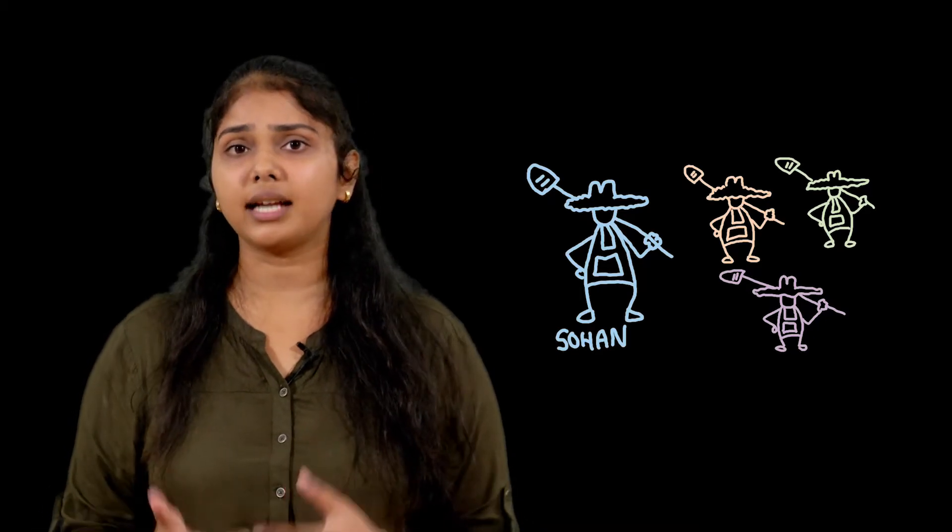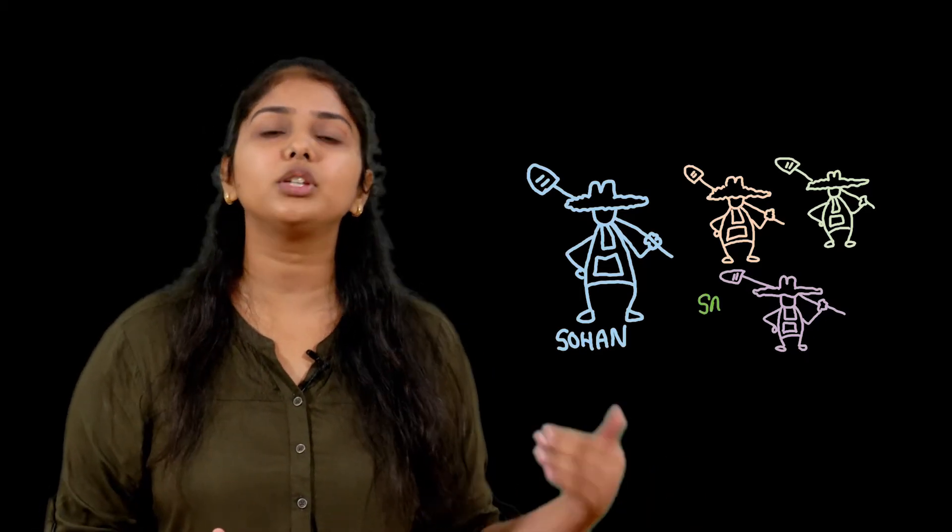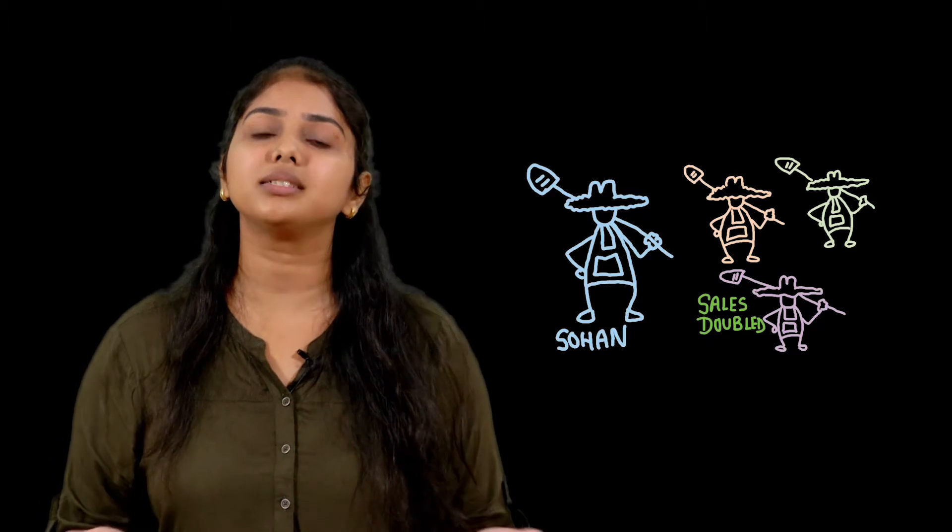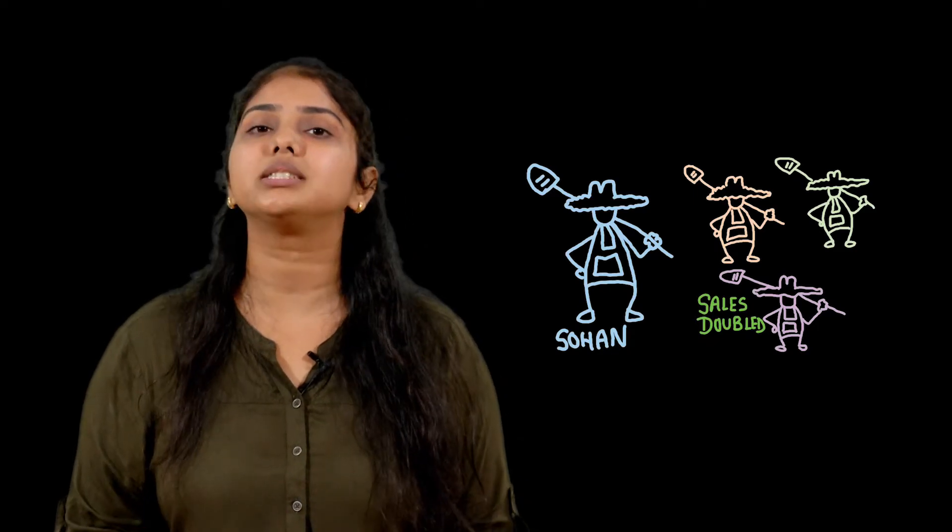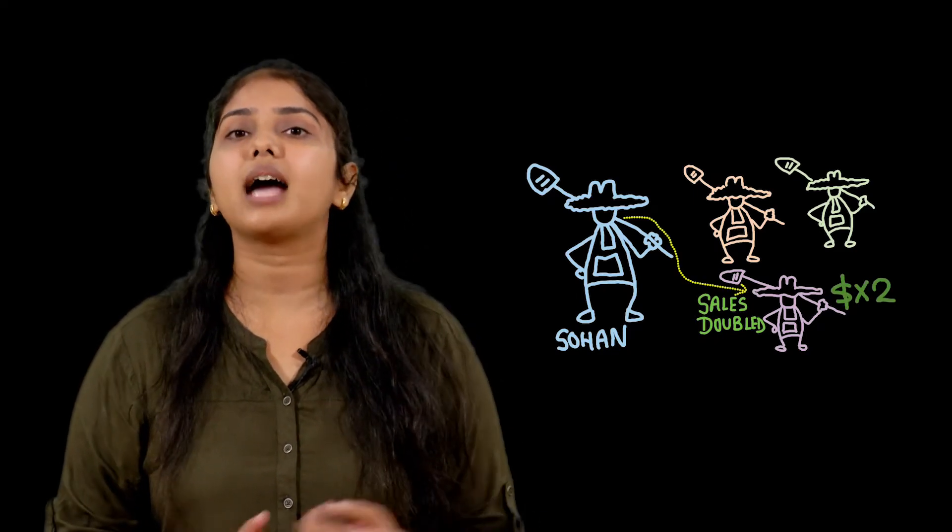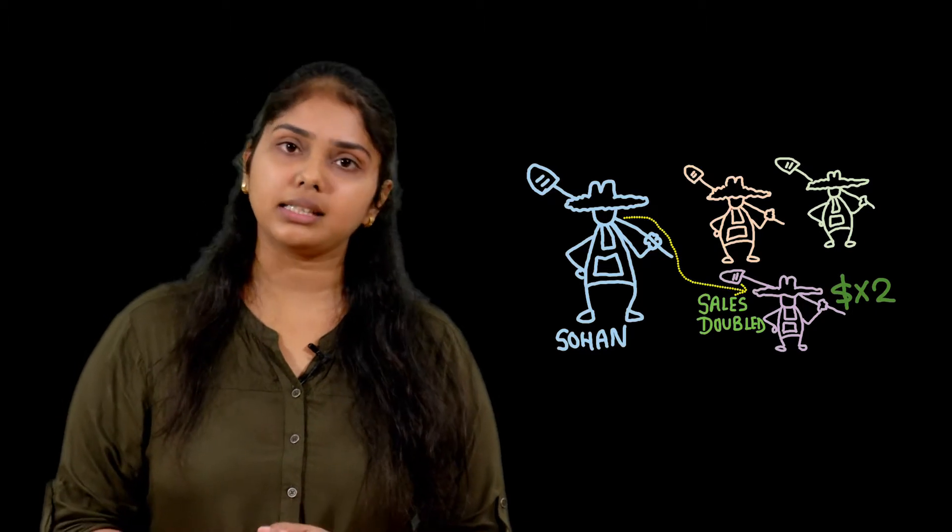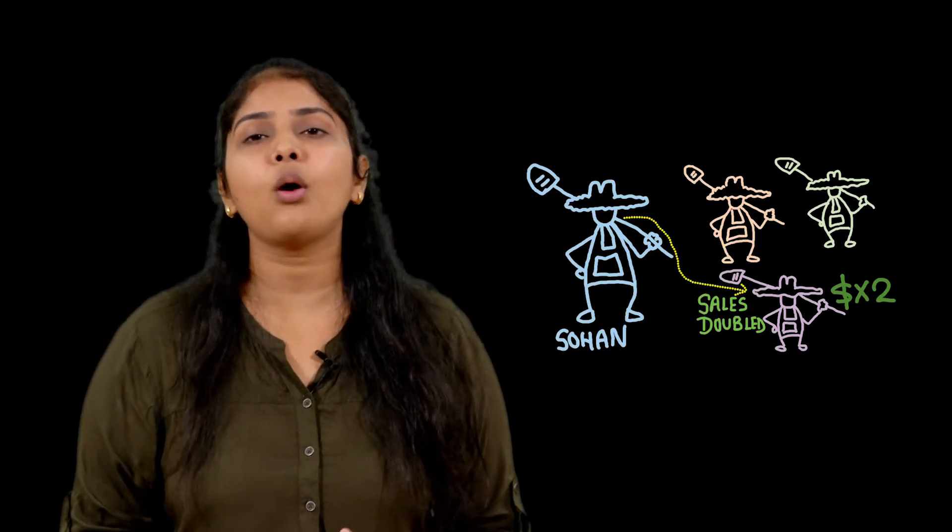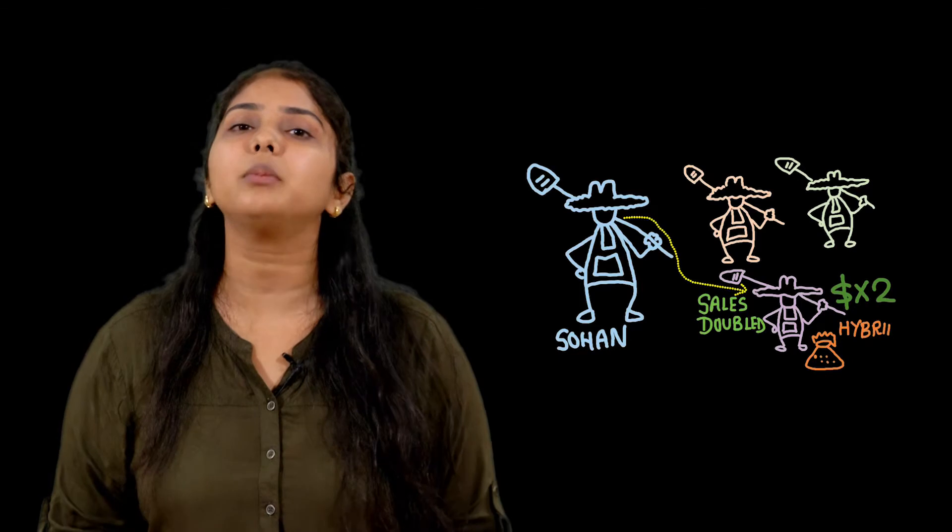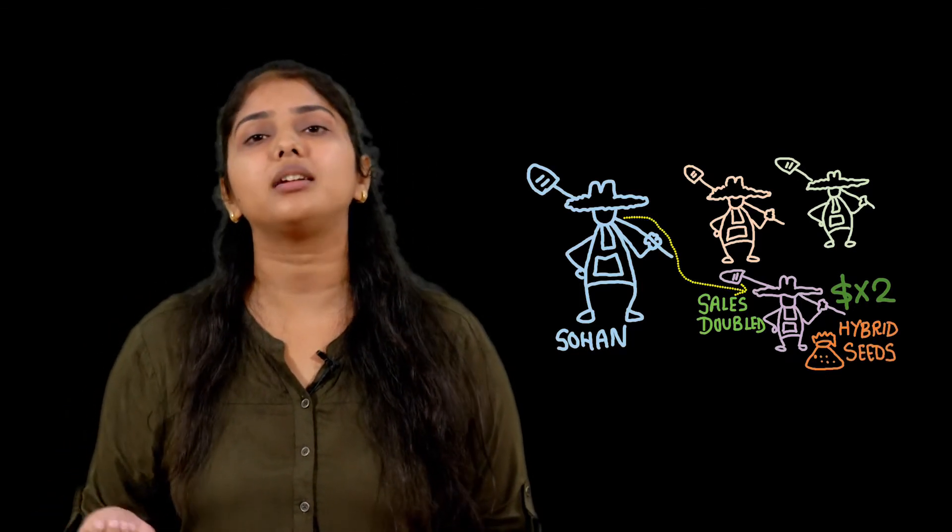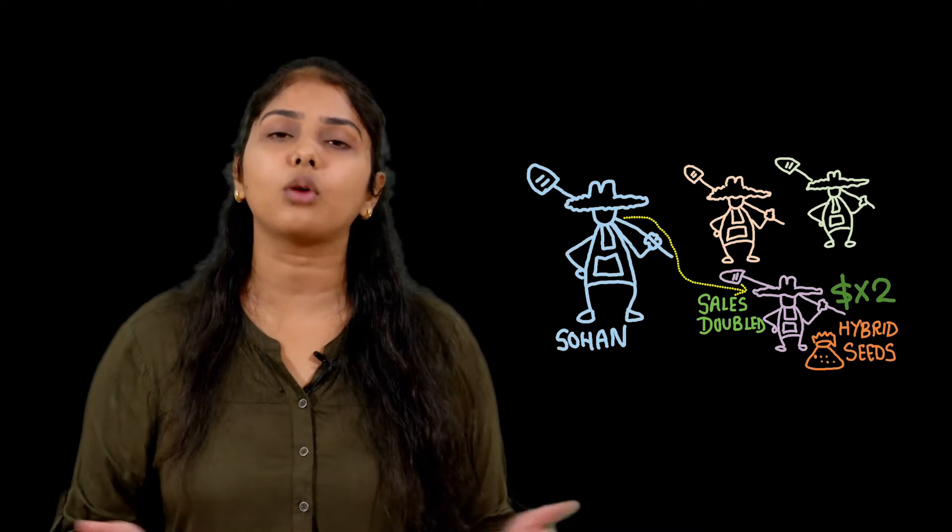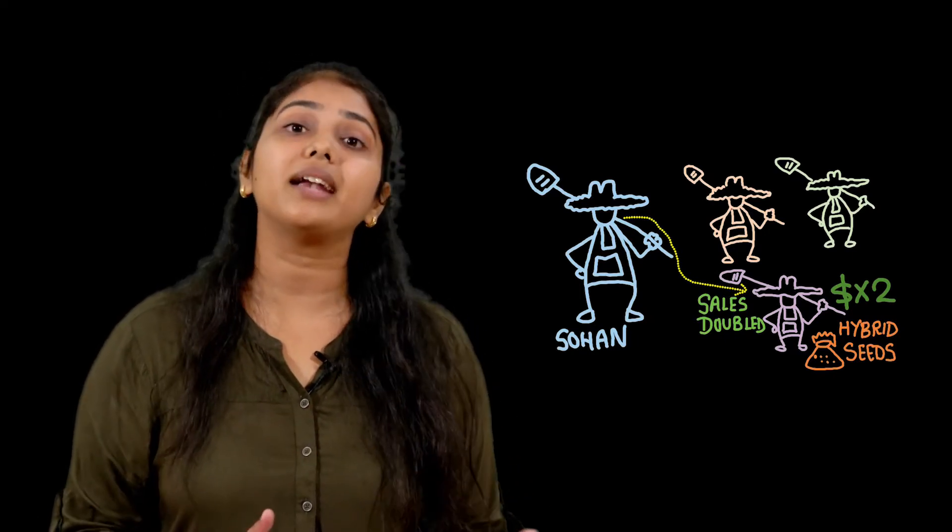And one day suddenly sales of the crops of his friend doubles and then Sohan is all very curious to know what happened in one day, how come his sales doubled. And then Sohan goes and asks him and his friend tells him that he has imported, he has got some imported hybrid seeds from America, which makes his crop grow at a double pace. So he has doubled the crops and hence he gets better sales.